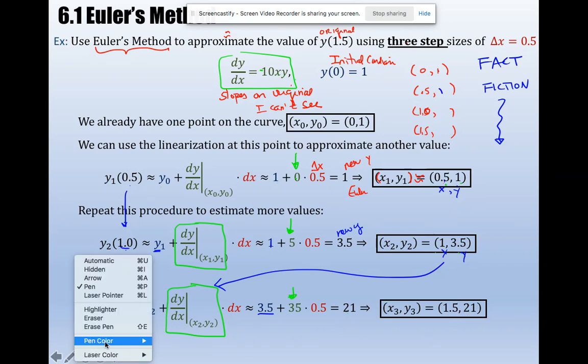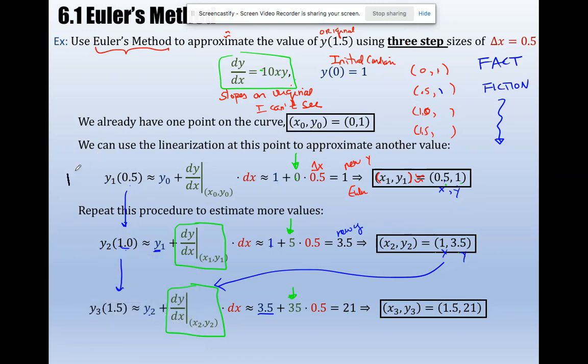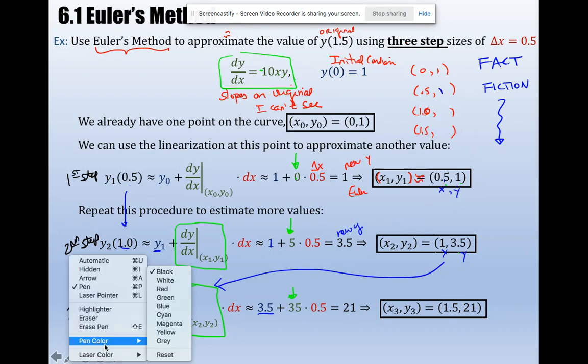So notice that I used three steps. Here's my original, and in addition to my fact I got three fiction values.